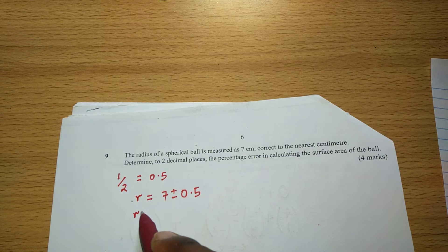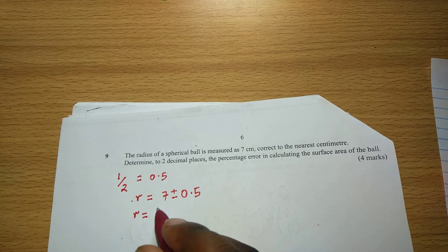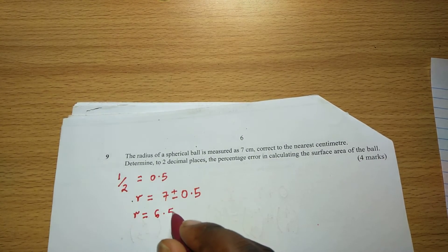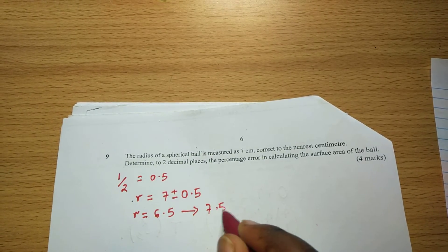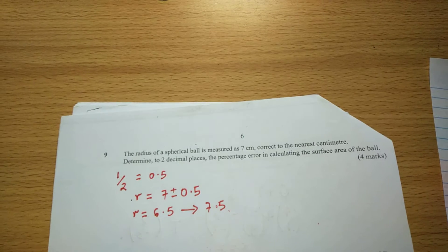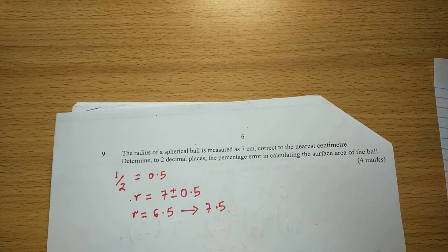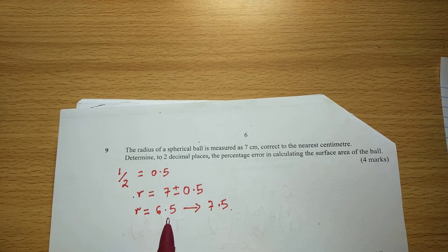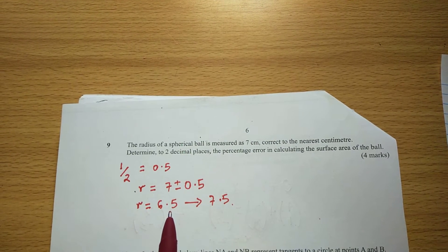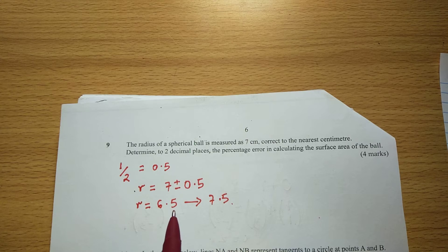Therefore the radius of this spherical ball is going to be 6.5 to 7.5 because it has been recorded to the nearest centimeter. That's why you can see the difference between the highest radius and the smallest radius is one complete centimeter.